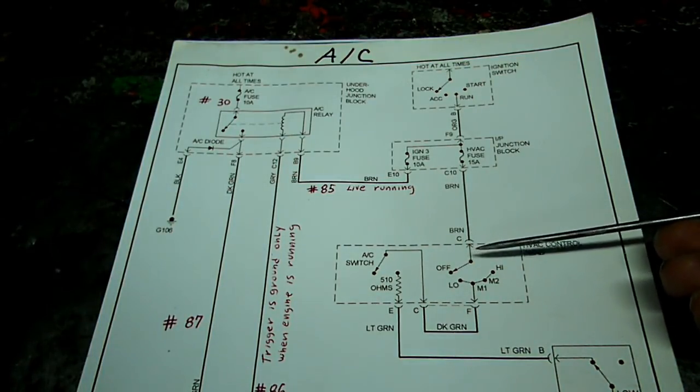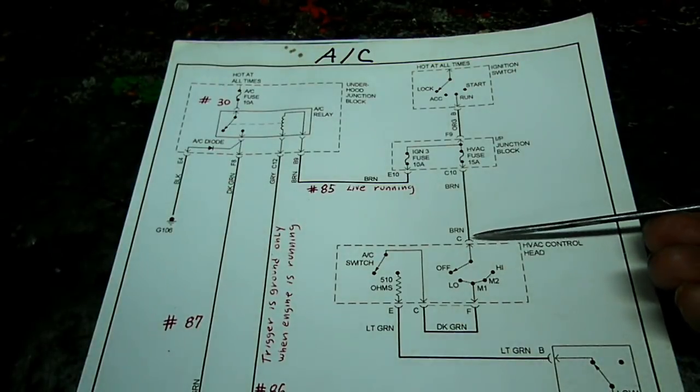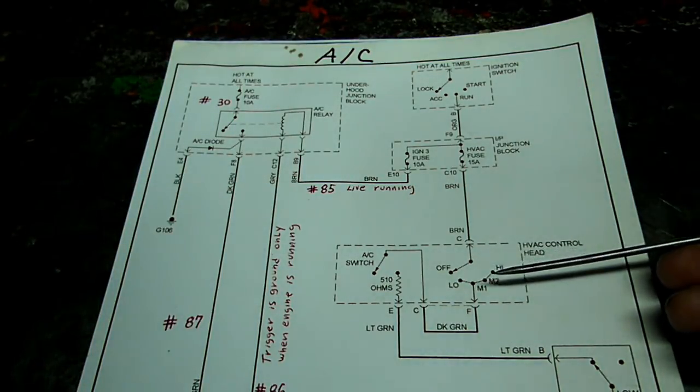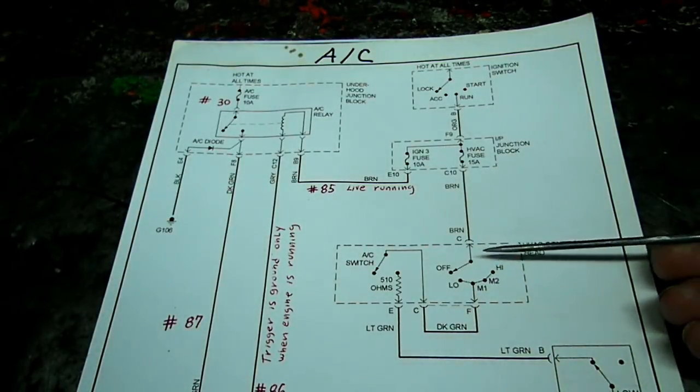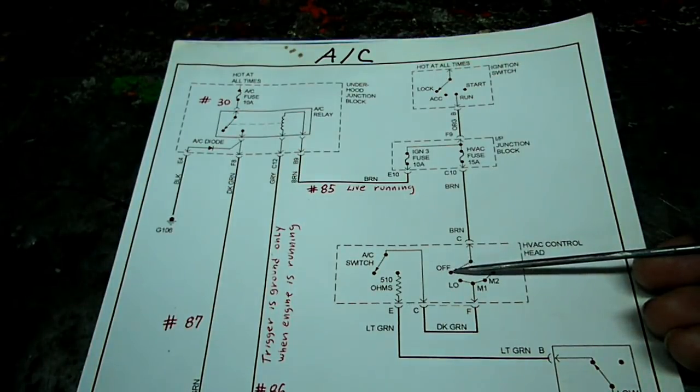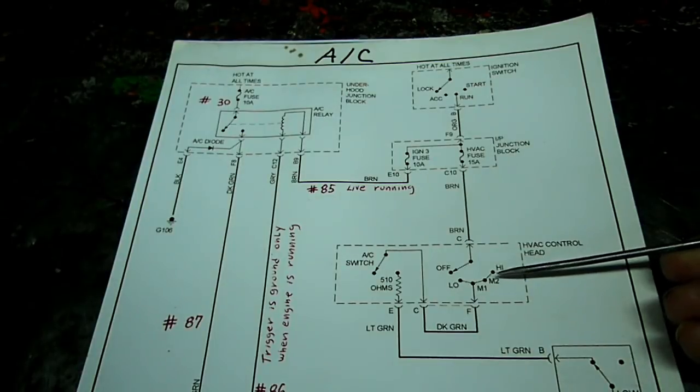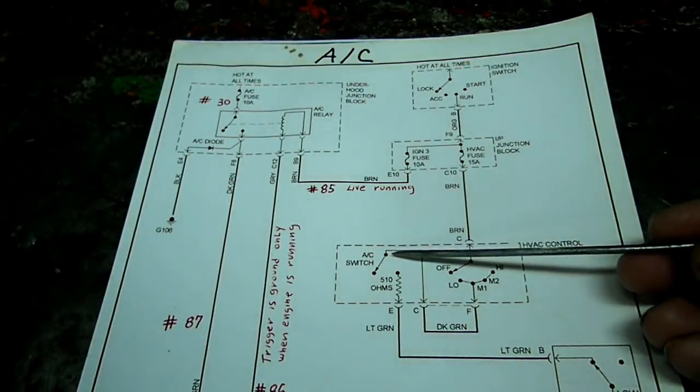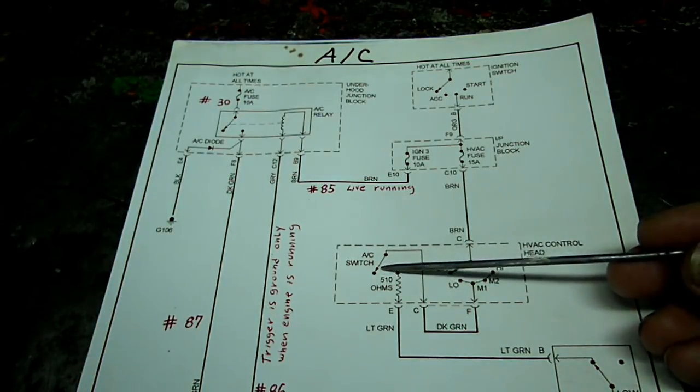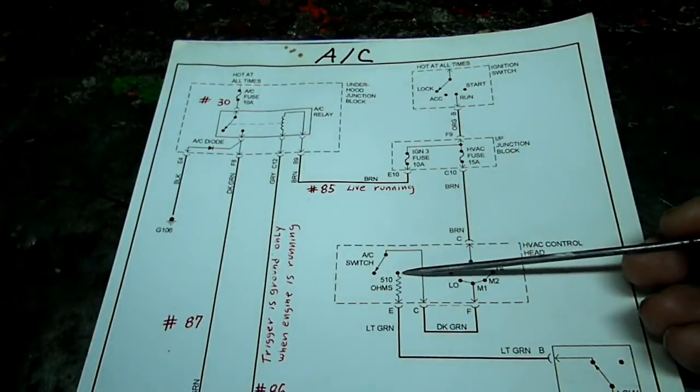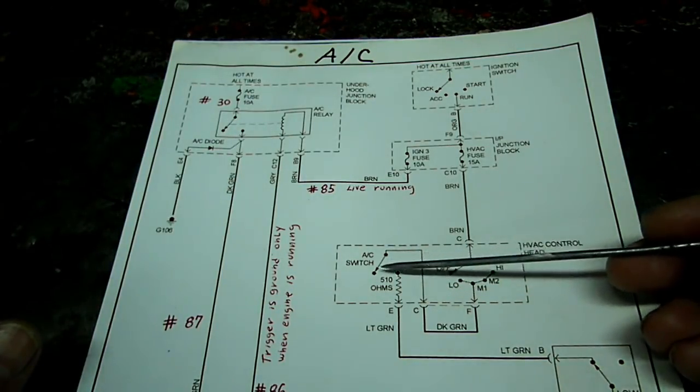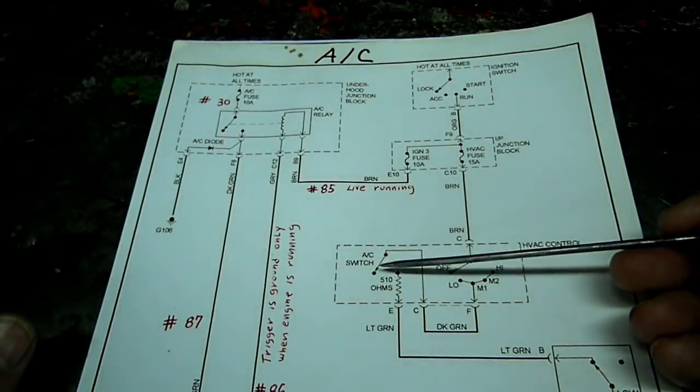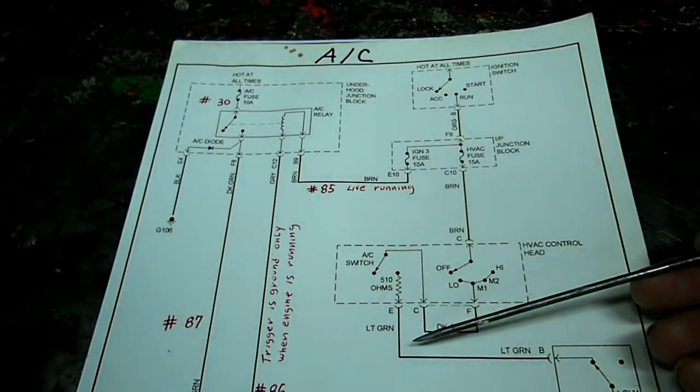You can see that once the voltage is switched to the blower motor, now what they are not showing you here is the output to the blower motor. But once the switch is turned to one of the settings here—low, medium, high, whatever the setting is—then the voltage will go out the dark green wire and then energize the AC switch right here. So it's showing a 510 ohm resistor on the output of the switch. Once you press that little AC button on the control head, then the voltage will come out here down this wire.